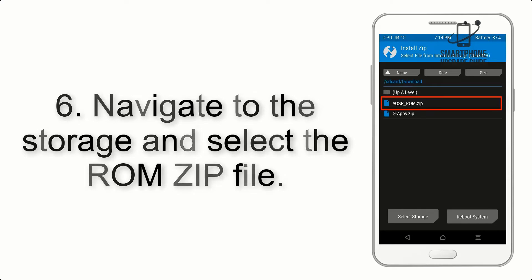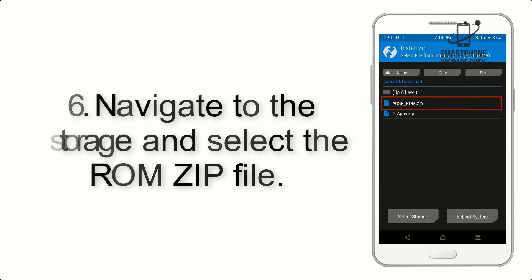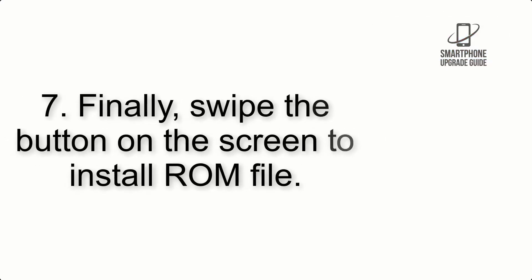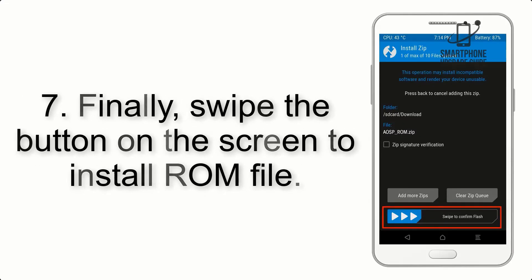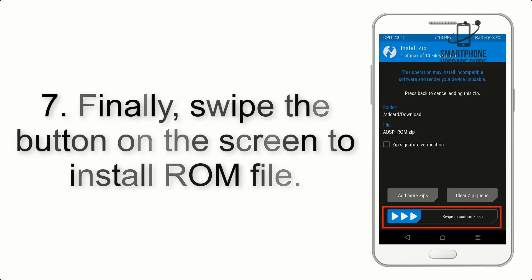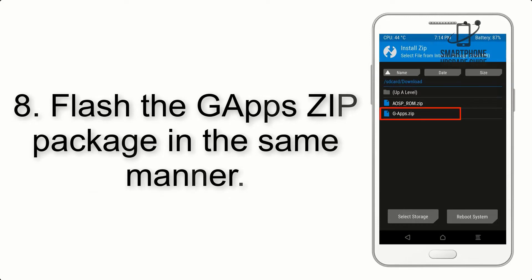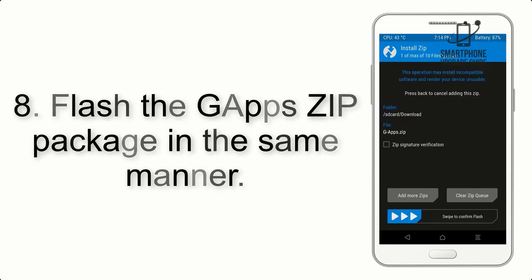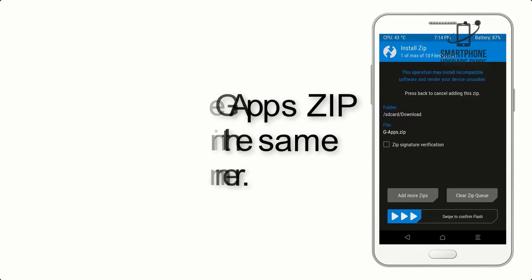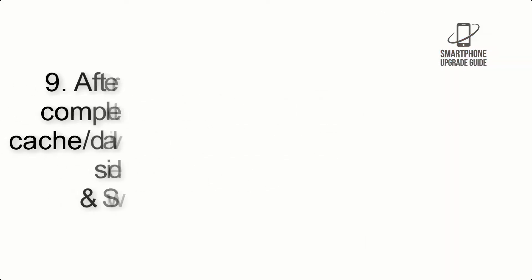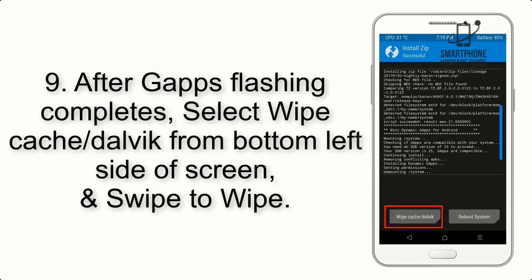Step 6: Navigate to the storage and select the ROM zip file. Step 7: Swipe the button on the screen to install the ROM file. Step 8: Flash the GApps zip package in the same manner.